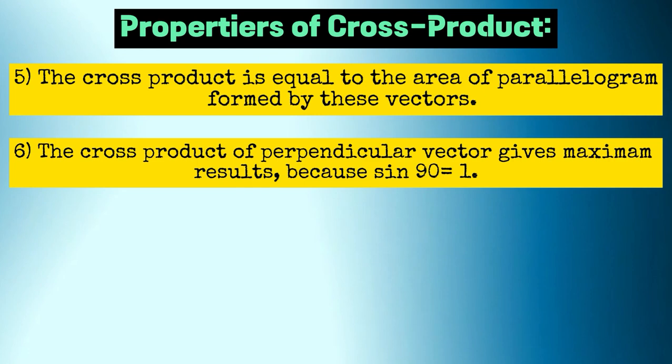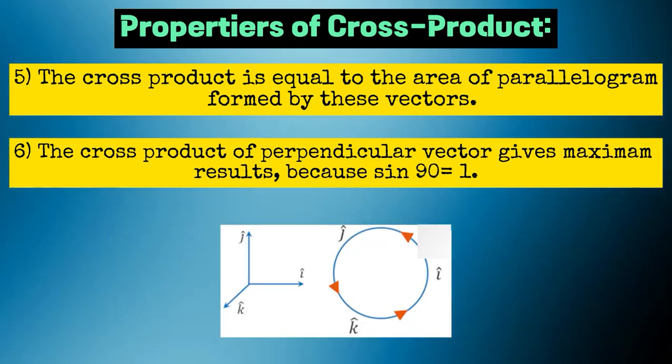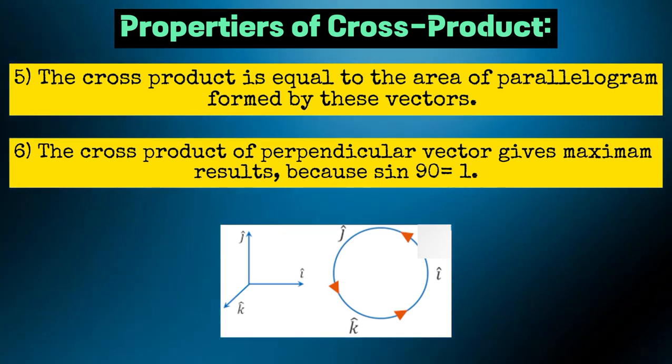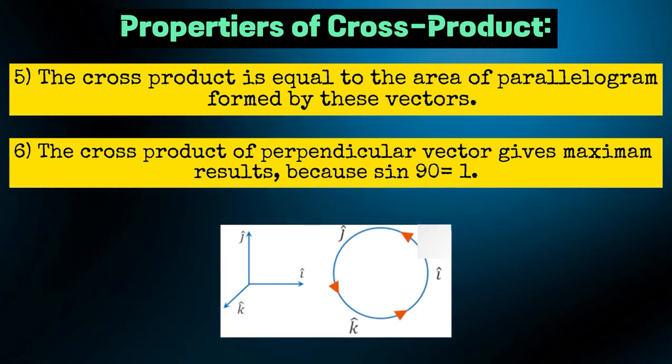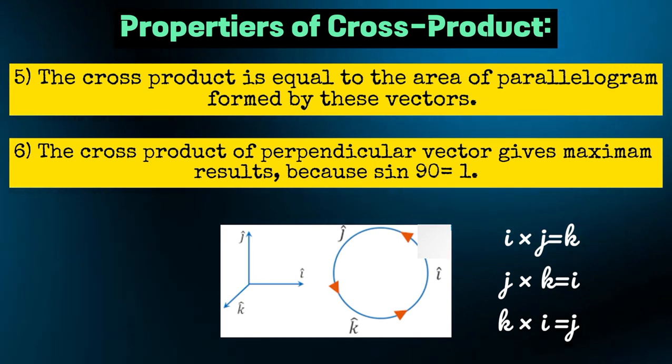In case of unit vectors we use one technique. We draw a circle and mention unit vectors i, j and k in anticlockwise direction. Now if we have to find i cross j, we'll check from circle what is next to j which is k, so i cross j equals k. Similarly, j cross k equals i and k cross i equals j.